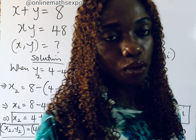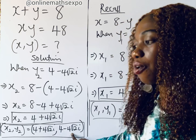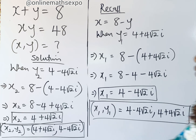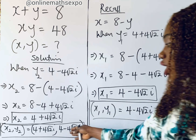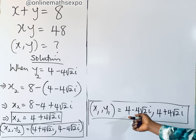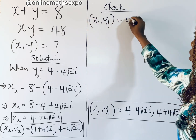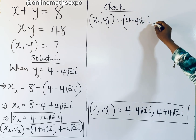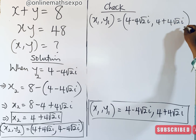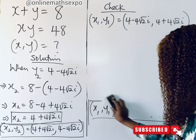You can observe that the first value of x is the same as the second value of y, and vice versa — the two solution sets are essentially the same. To check, we'll work with the first set: x₁ = 4 minus 4 root 2 i and y₁ = 4 plus 4 root 2 i. We'll add them and also multiply them to verify.